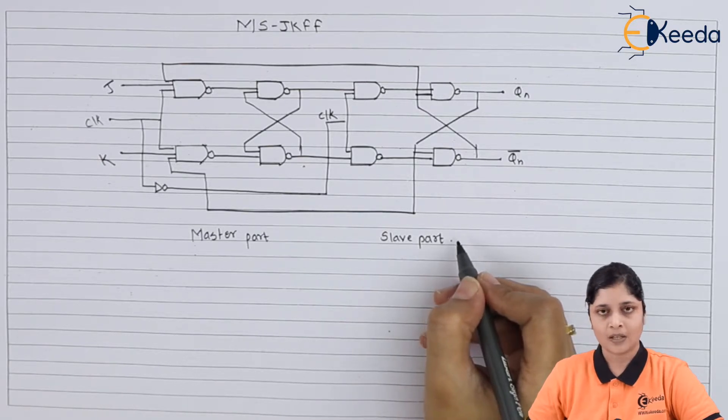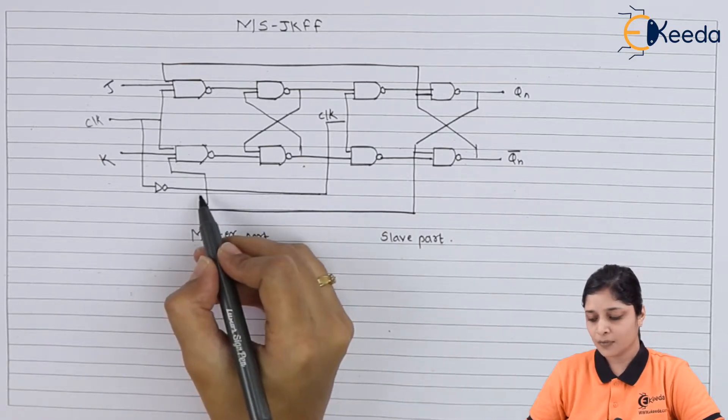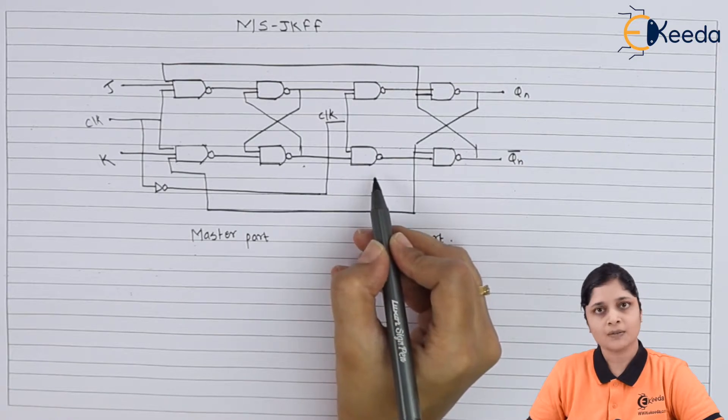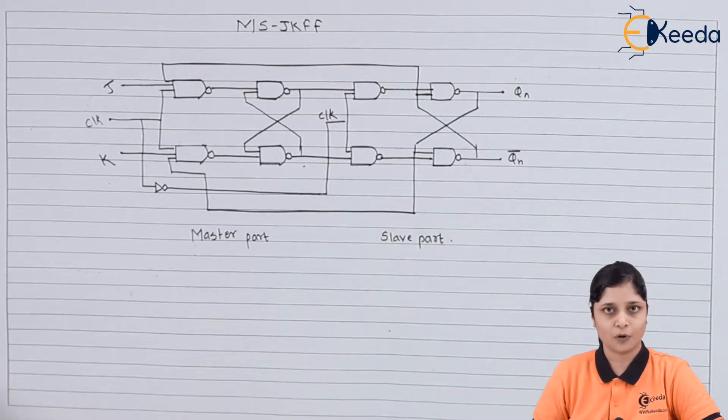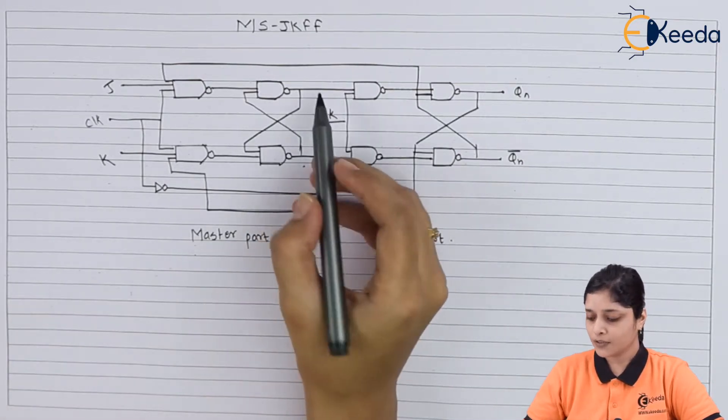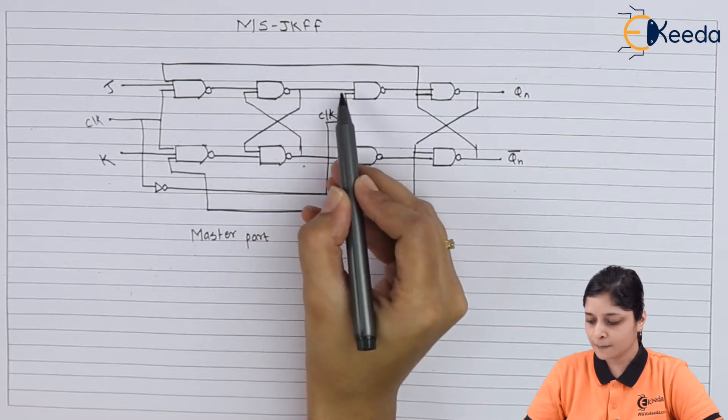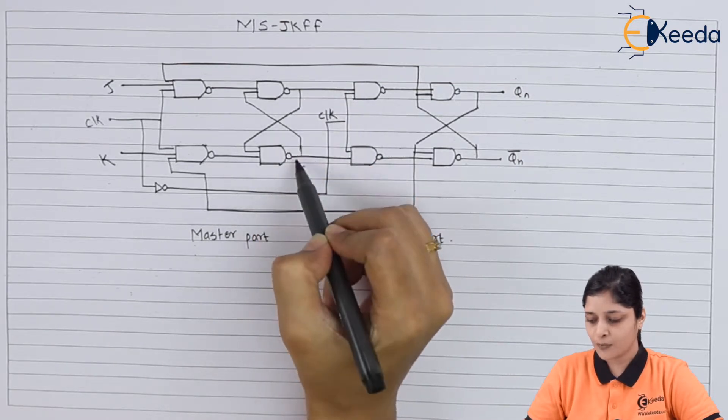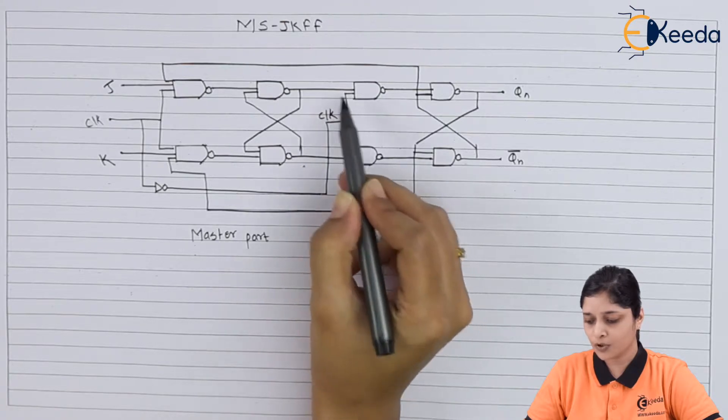Output of master flip-flop we have given to the input of the slave flip-flop. Now whatever connections we have made here, this is the output of master flip-flop, this will give the input to the slave flip-flop. These two JK flip-flops are connected in series combination.